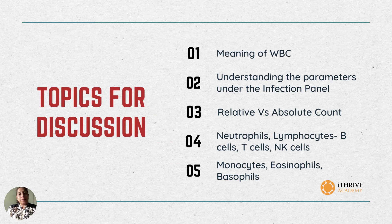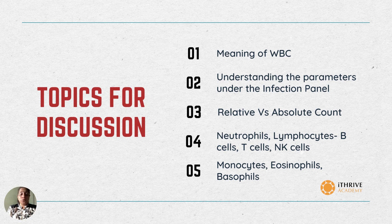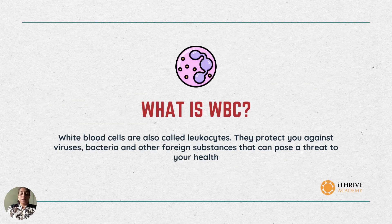The topics that we are going to discuss today include what is WBC, understanding the parameters under the infection panel, relative count and absolute count, the different types of WBCs — that is the neutrophils, the lymphocytes, the different types of lymphocytes, then the monocytes, the eosinophils, and the basophils.